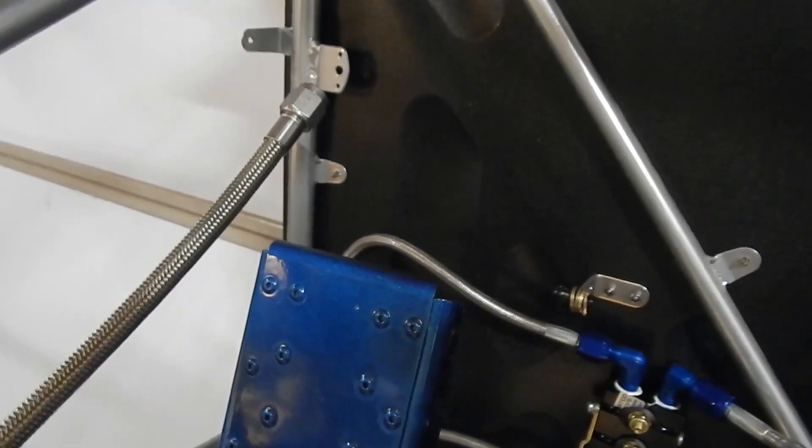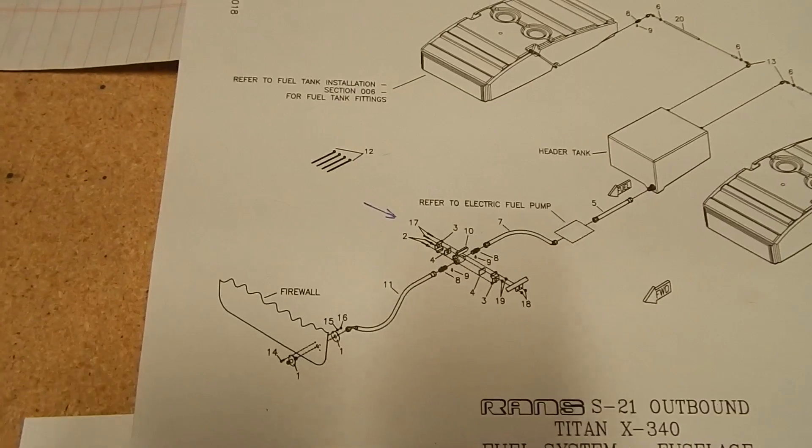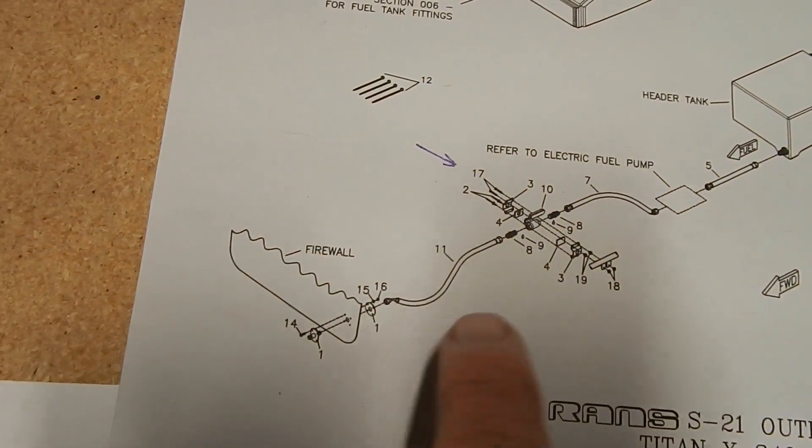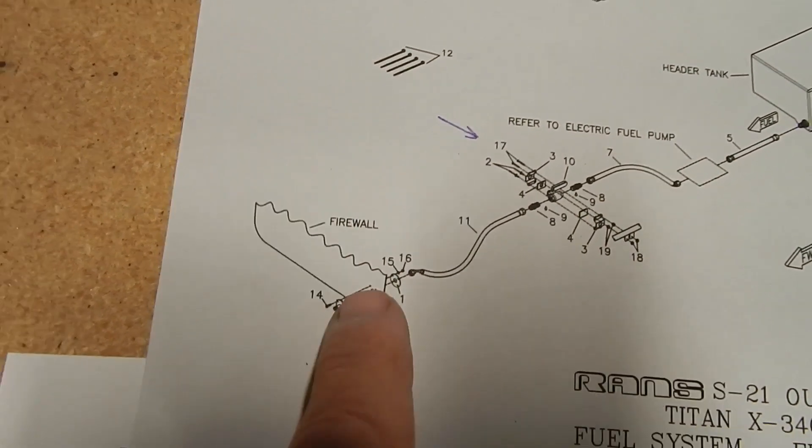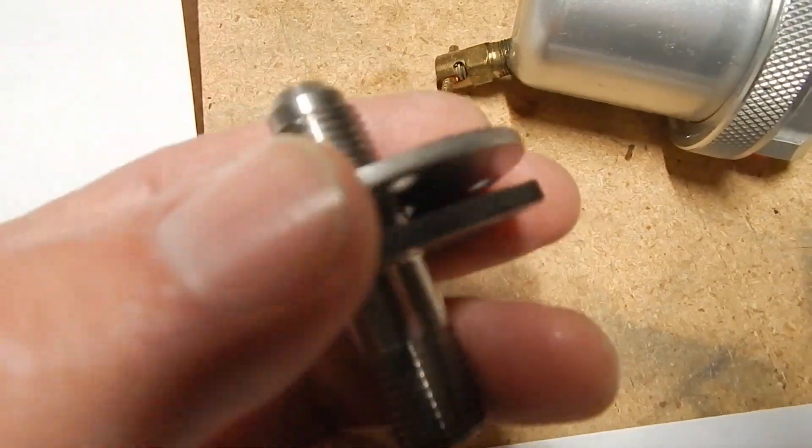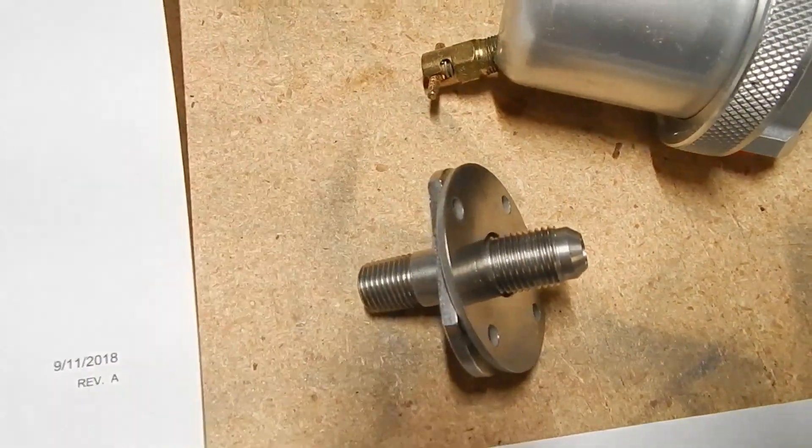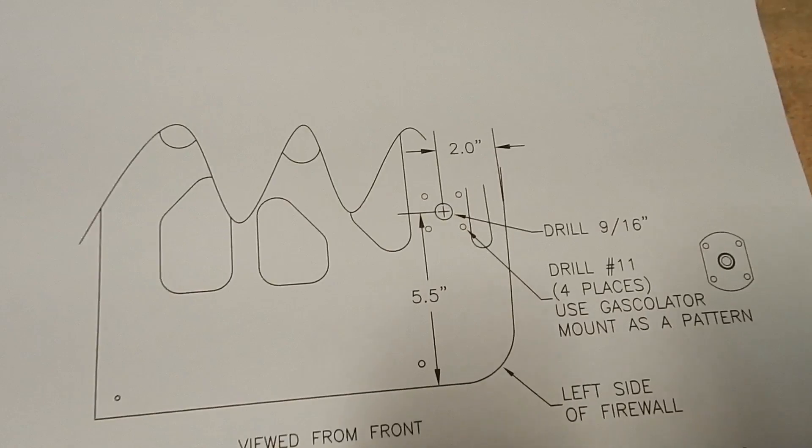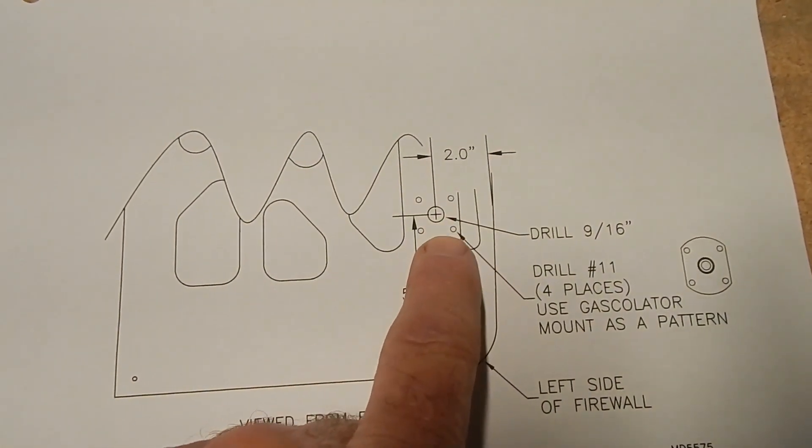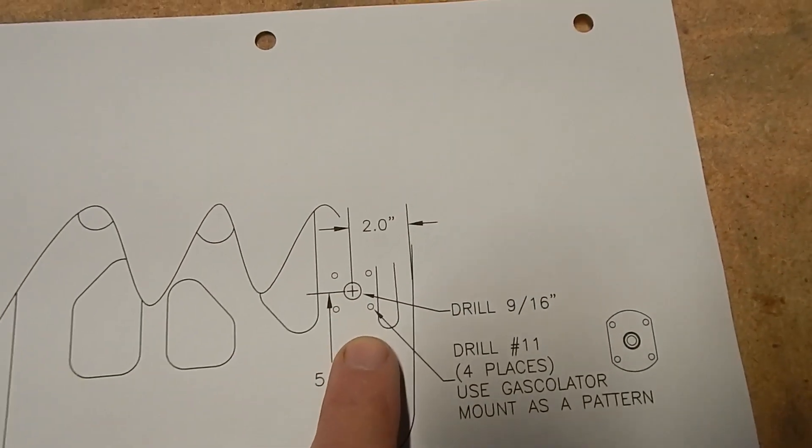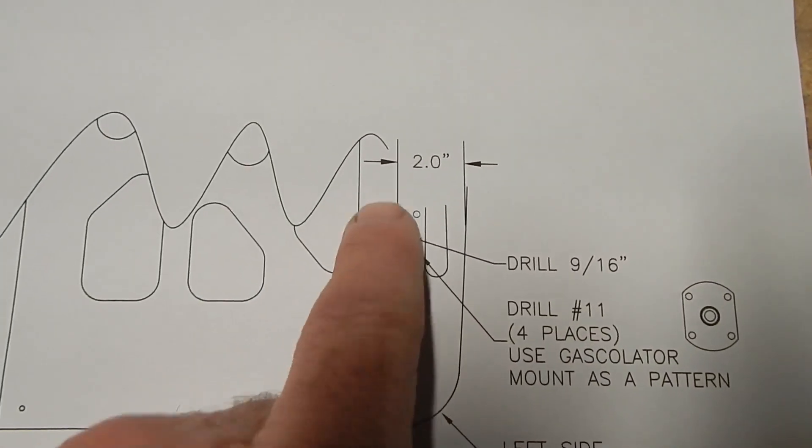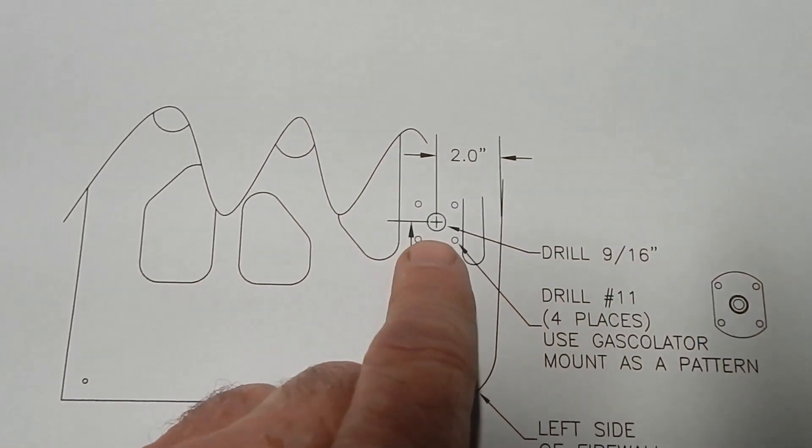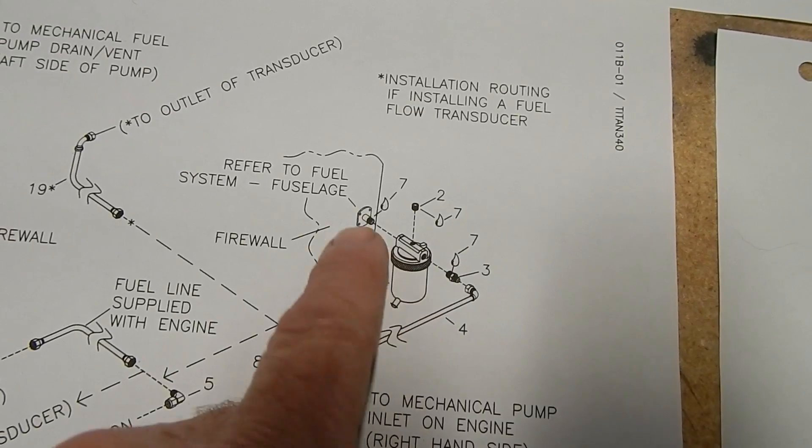The next thing I'm going to do is this gascolator mount. It's kind of continuing on from my fuel valve, and this mounts into the firewall. The gascolator mount is a pretty simple device. The first step, it gives you a diagram. This hole is already located for you, so you just have to upsize it to 9/16. Notice the orientation of the gascolator mount is up-down. You drill these four holes to a number 11 to take a 3/16 bolt.